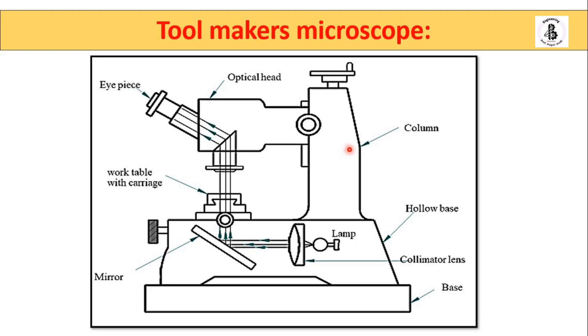And onto this column, it will be attached with the optical head. With the help of this mechanism, you can easily adjust the height of the optical head. And just you can see over here, the lamp is being used.